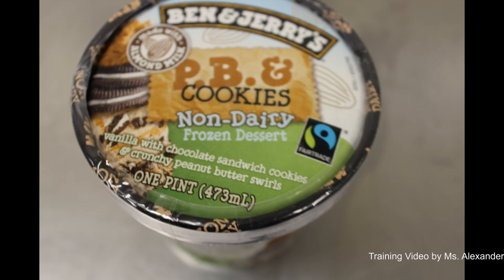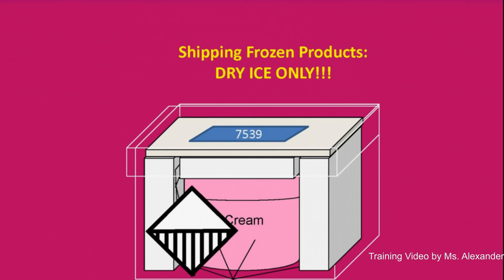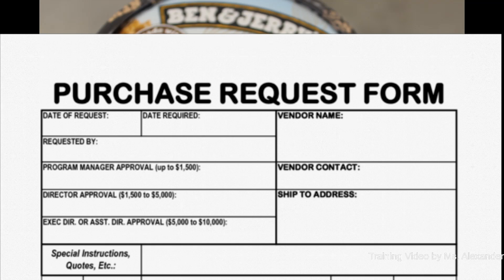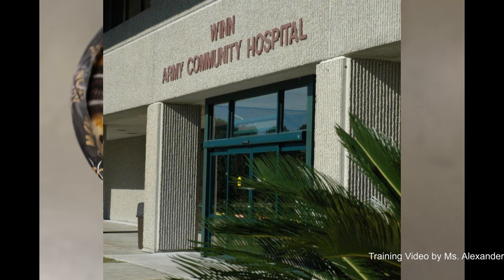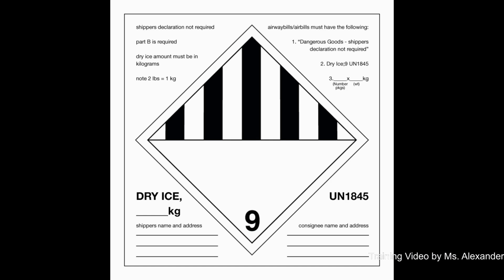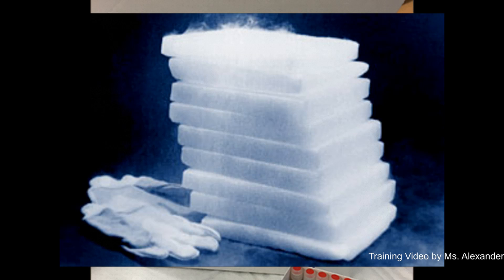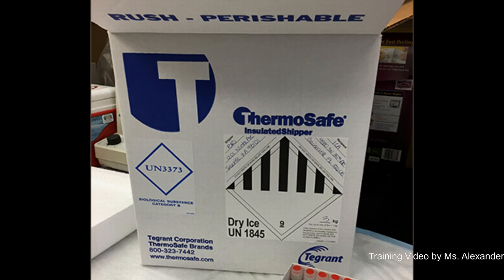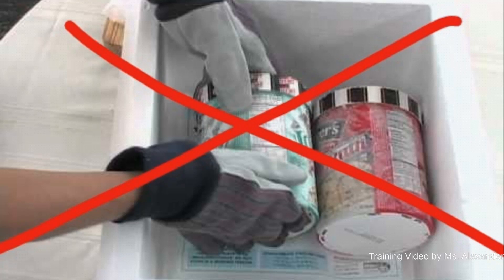When sending frozen samples, you can only use dry ice. Different units have different requirements to acquire dry ice. In some cases, you may have to submit a purchase request through your unit, or it could be as simple as going through your base hospital. When sending frozen food with dry ice, make sure you label your box with a dry ice warning label and ensure you have enough dry ice to keep your frozen food frozen. Also ensure the dry ice is not in direct contact with the samples.